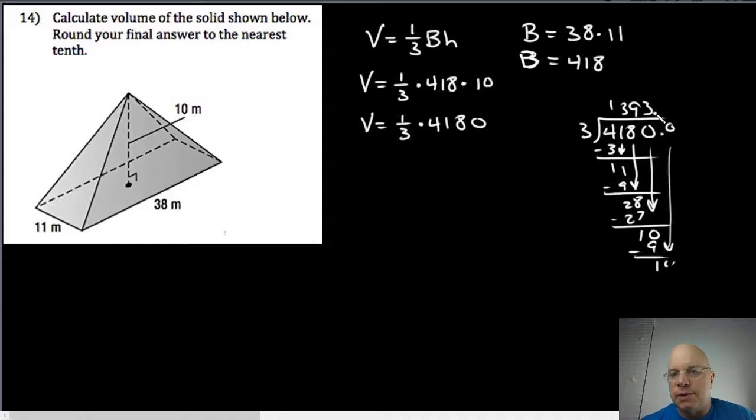I'm going to keep getting tens, so I know the exact volume is 1393.3 repeating. But the directions tell us to round to the nearest tenth, so 1393.3 meters cubed for volume.